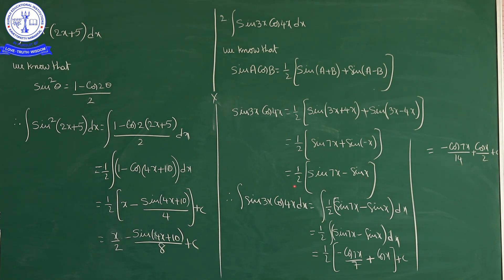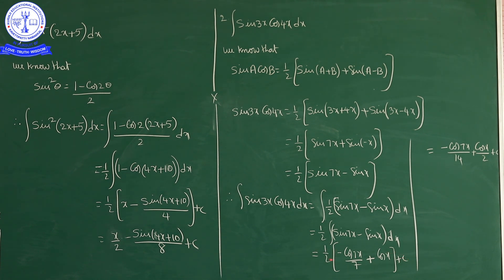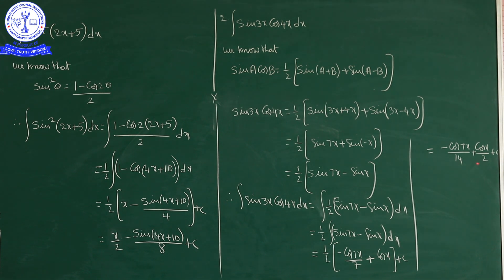So the integration of sin(3x)·cos(4x) dx equals (1/2) ∫ [sin(7x) minus sin x] dx. Integration of sin(7x) is minus cos(7x)/7, and integration of minus sin x is cos x. Multiplying 1/2 inside gives the answer: minus cos(7x)/14 plus cos x/2 plus C.